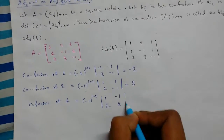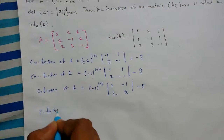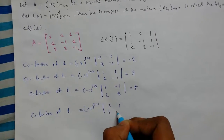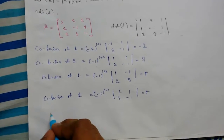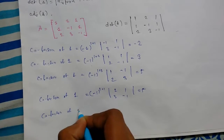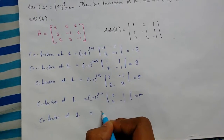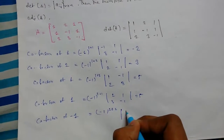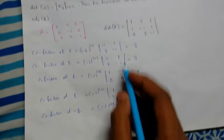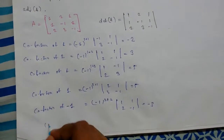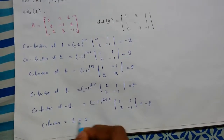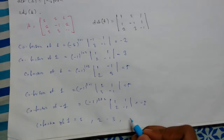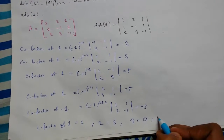Cofactor of the second row's first element, 1: this gives 5. Cofactor of -1: (-1)^(2+2) times 1, 2, 2, -1, which gives -3. Cofactor of the second row's last element, 1: this gives -3. For the third row: cofactor of 2 gives 1, cofactor of 3 gives 0, and cofactor of -1 gives -3.